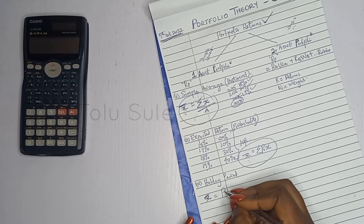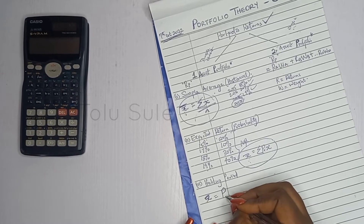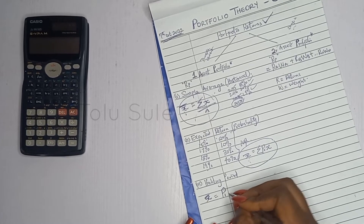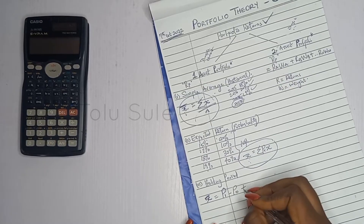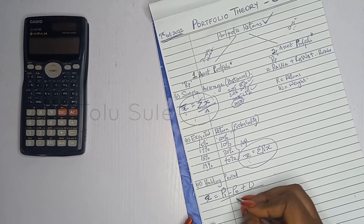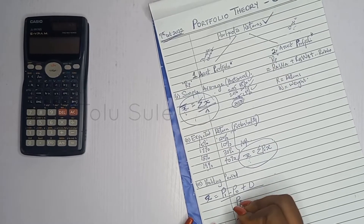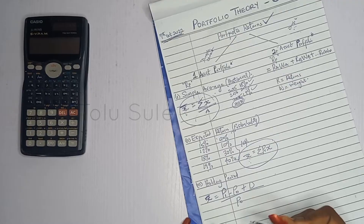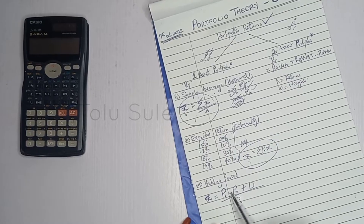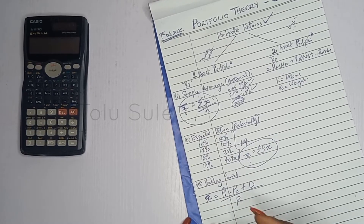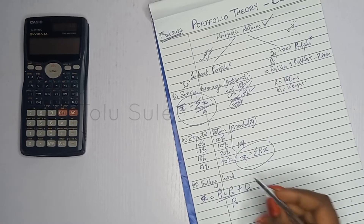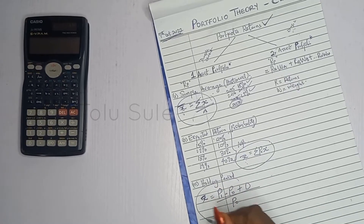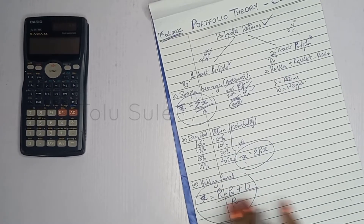The portfolio return under the holding period method is: stock price in the future minus the stock price now, plus the dividend, divided by the old stock price. Essentially, it's finding the percentage change. We'll solve questions to demonstrate each approach.